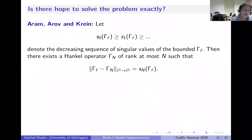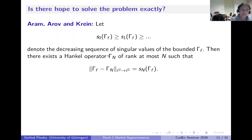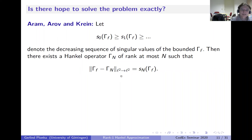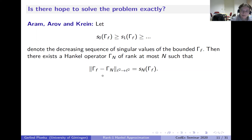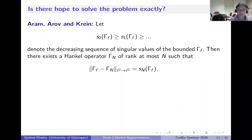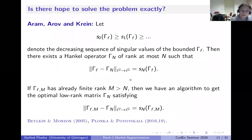Even better: from the AAK theorem (Adamyan, Arov, Krein), if we order the singular values of the Hankel operator—σ₀ being the largest—there always exists a Hankel operator of rank at most n such that the error ‖Γ_f − Γ_n‖ equals exactly σ_{n+1}, the (n+1)-th singular value. This is the best we can hope for, matching the Eckart-Young-Mirsky benchmark, but now with Hankel structure. We know how to find this best approximation in the infinite case.